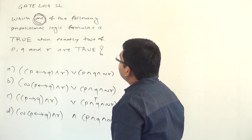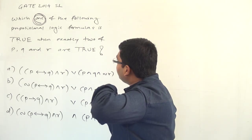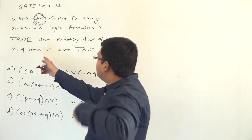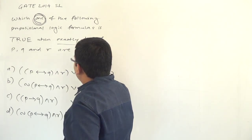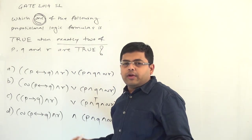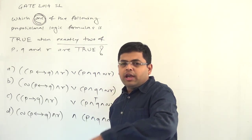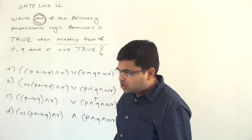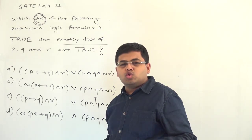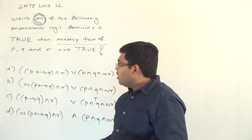The question is asking: whenever you make exactly two of P, Q and R true and the third one false, the formula should evaluate to true.